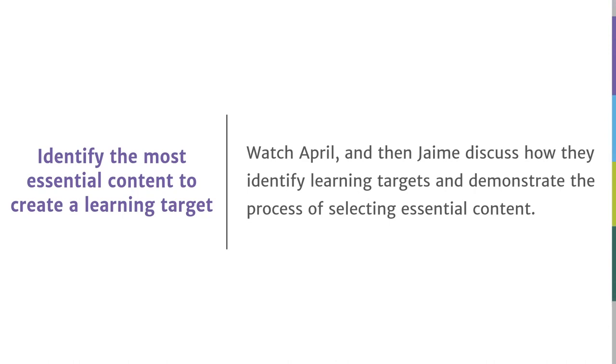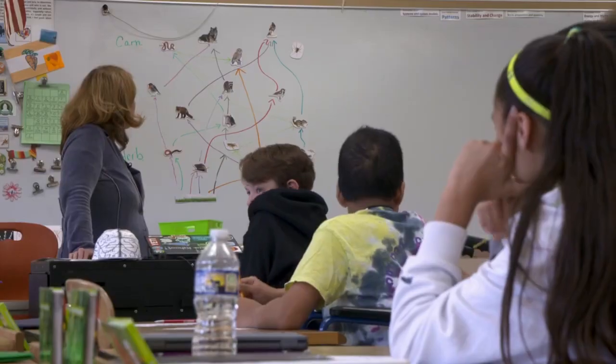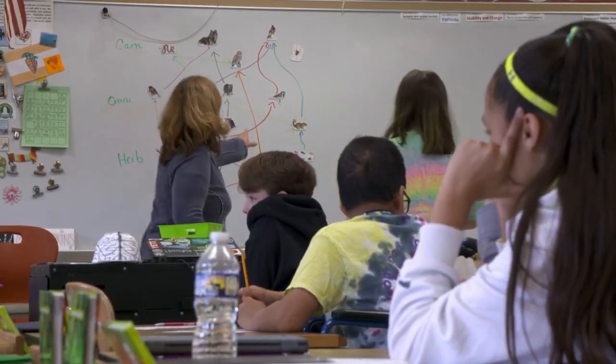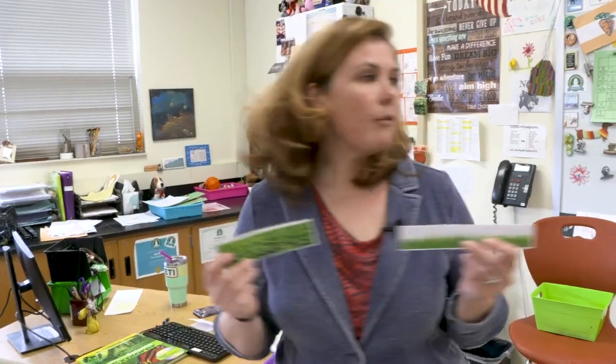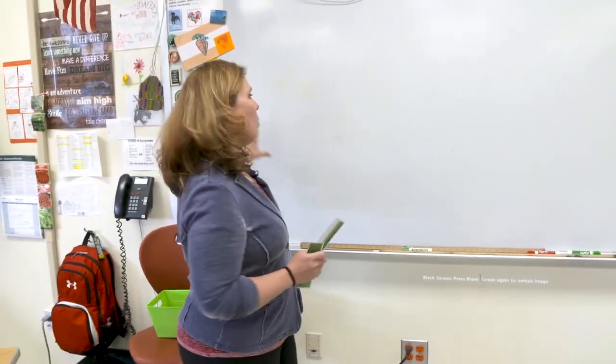Watch April Tompkins, seventh grade science teacher, and Jamie Keeley, sixth grade science teacher, discuss identifying learning targets and selecting essential content. To prioritize content, Jamie refers to the NGSS essential elements. Since NGSS only provides essential elements for certain units, for other content units she works with other teachers and Alt Framework support staff to determine the most appropriate content. Currently learning about ecosystems, she reviews the three levels of essential elements and, depending on the students, determines which specific level to target to guide which content to emphasize.